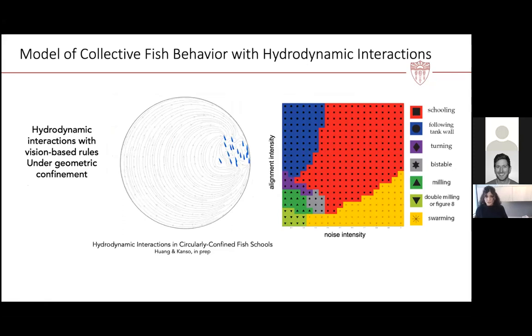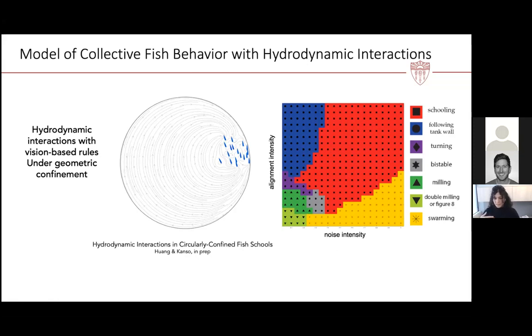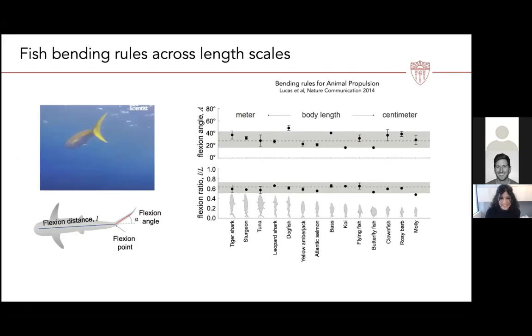My student Chen Chen has been generalizing these models to fish in confined geometries—here I'm showing circular confinement—and looking at the collective modes that emerge. What's most interesting is the regions of parameter space where the school exhibits intermittent bistable behavior, transitioning back and forth between milling and spooling for the same parameter values.